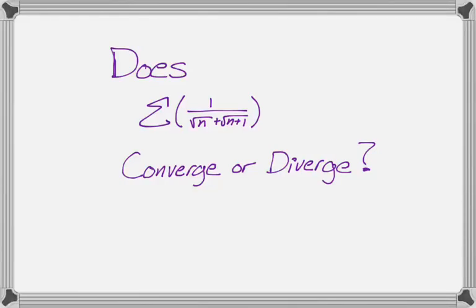All right, in this video we are going to take a look at whether or not the sum of one over radical n plus radical n plus one converges or diverges. So that's what we're interested in. And we're going to do it two different ways.